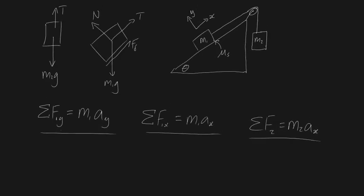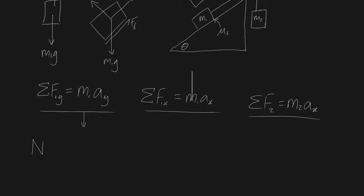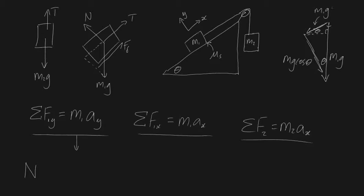Let's see what the sum of forces in our y direction is for block one. We have our normal force N in the y direction, and the component of gravity acting in y. Splitting gravity m1g into components: the x component is m1g sinθ and the y component is m1g cosθ — which we get from the geometry of the angle θ. So our equation becomes: N minus m1g cosθ equals m1ay.